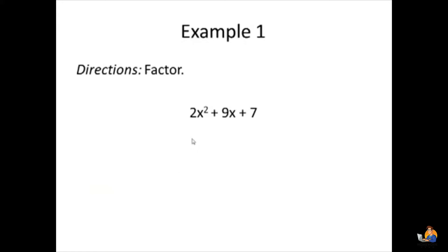We need to come up with two factors that will multiply together to get this trinomial. One of the factors will start off with 2x because 2x times x needs to equal 2x squared, and this is the only way that can happen. Looking at our signs, the second sign is positive which means both signs will be the same, and the first sign is positive, so they're both positive.